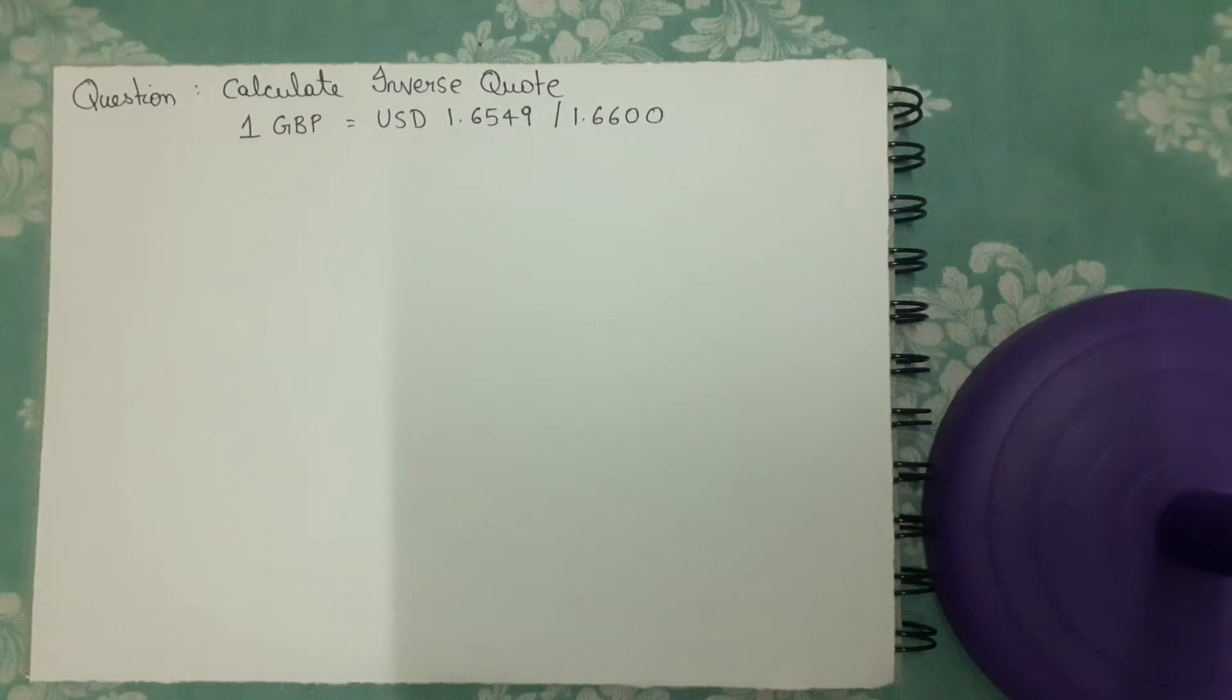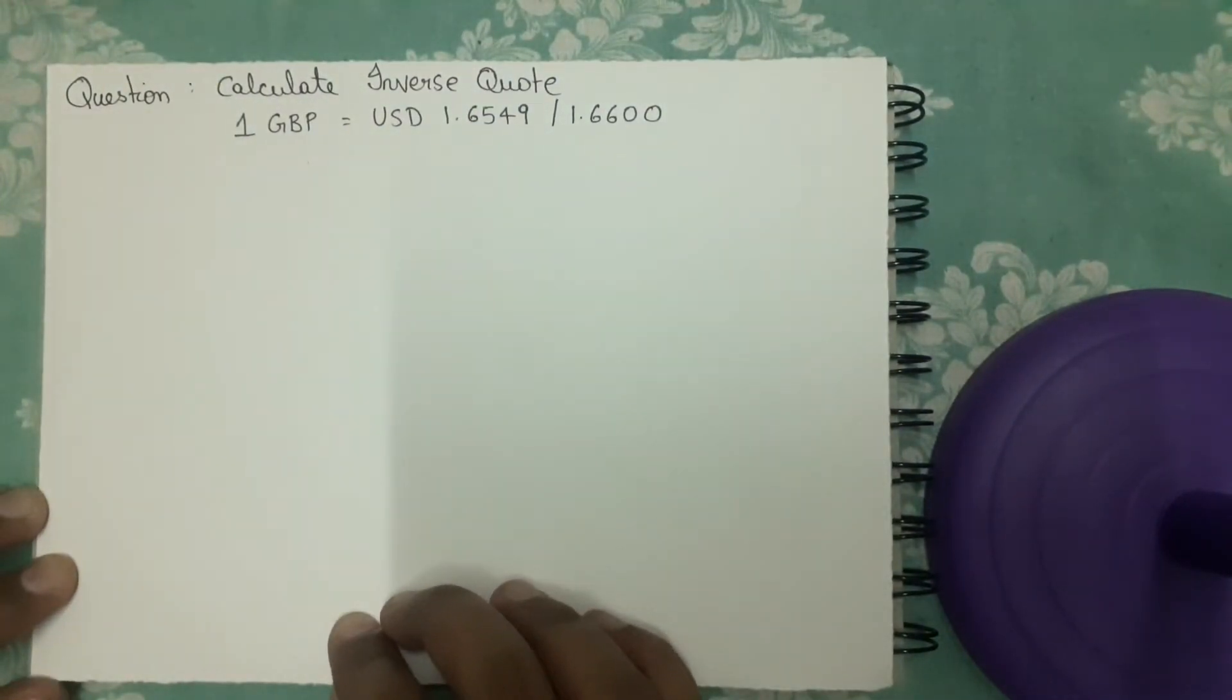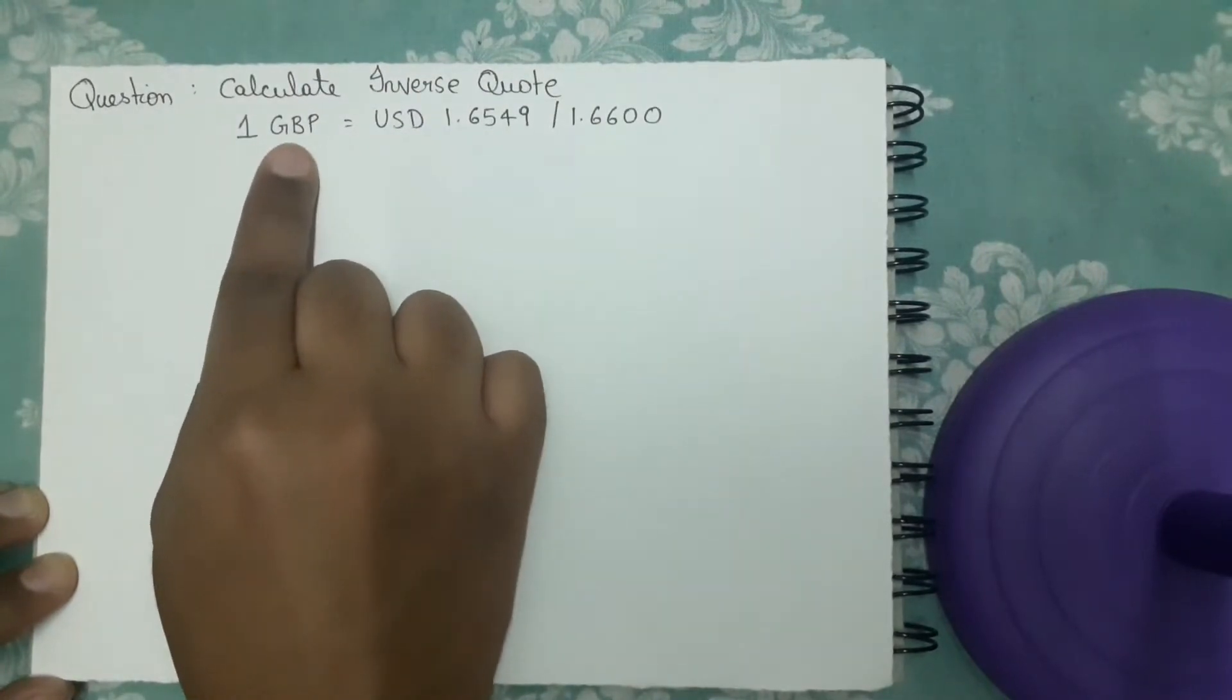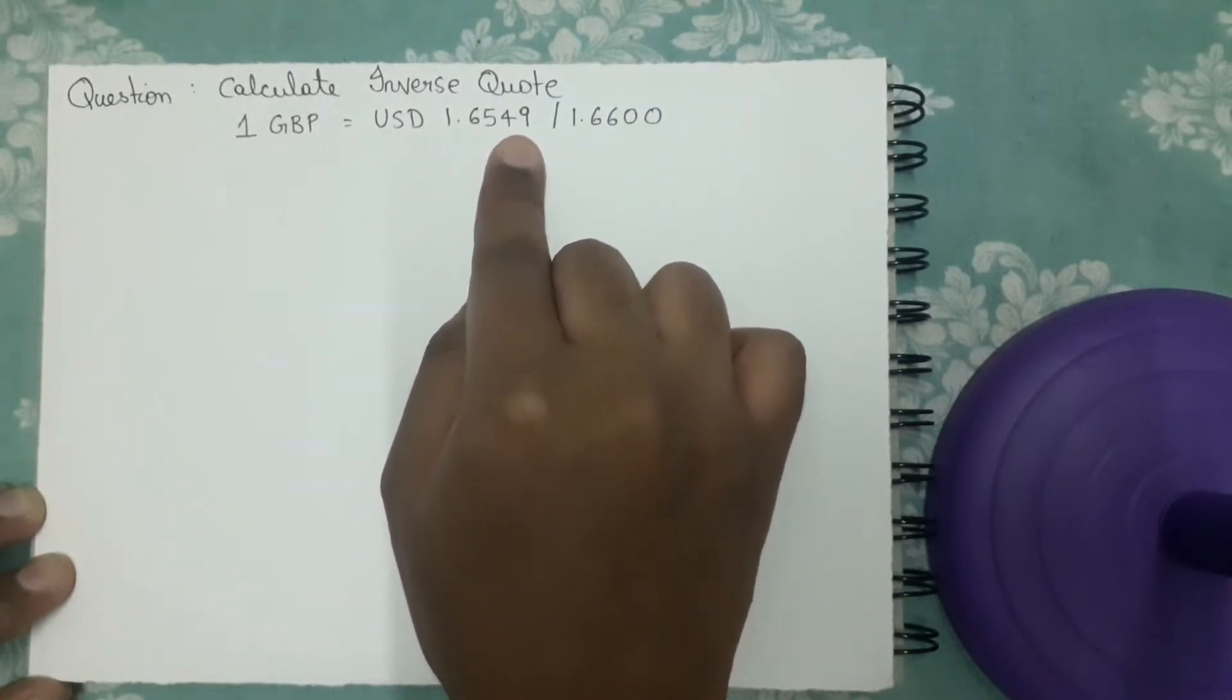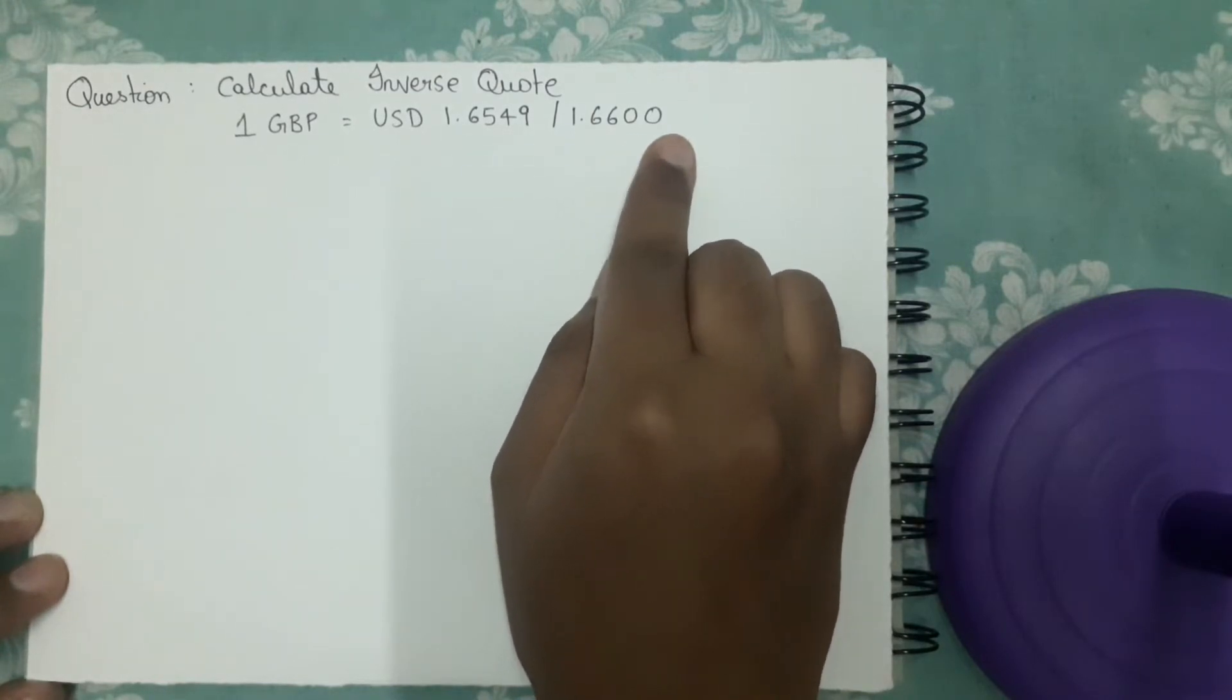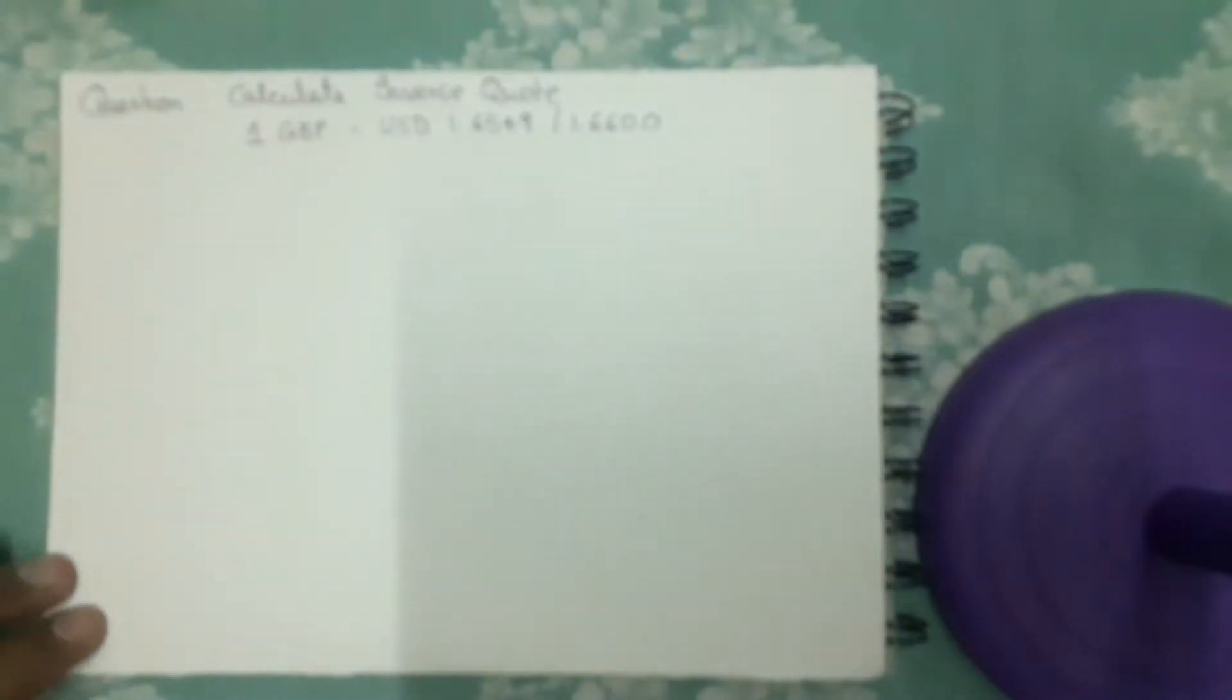Hi friends, today we are going to solve a question on inverse quote. The question is: calculate the inverse quote. One Great Britain Pound is equal to US Dollar, bid rate is 1.6549 and ask rate is 1.6600. We have to find the inverse quote.